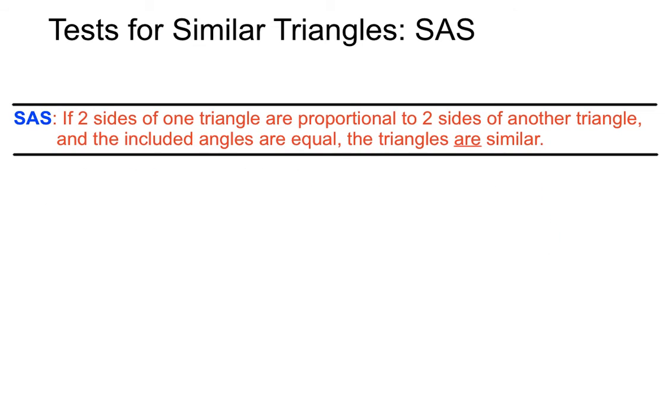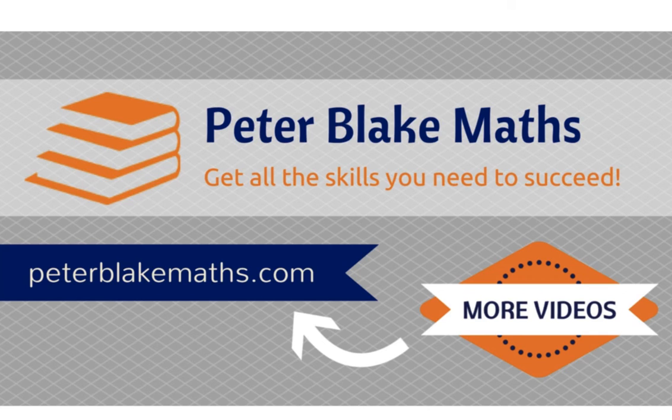And we'll just recap. SAS test for similar triangles says that if two sides of one triangle are proportional or in the same ratio to two sides of another triangle, and the included angles are equal, the triangles we can state are similar. That's the SAS test for similar triangles.